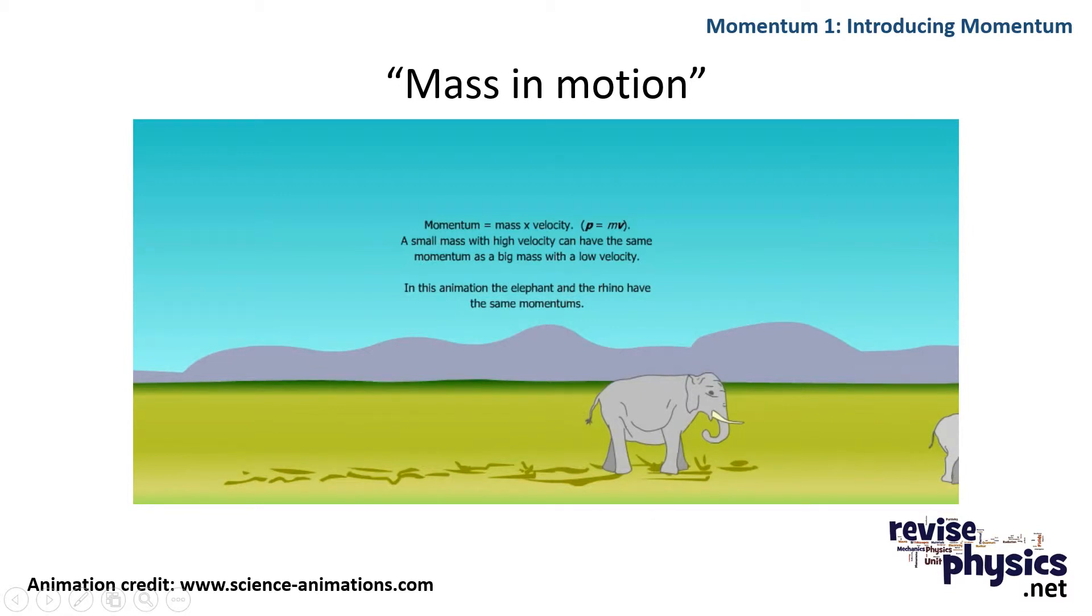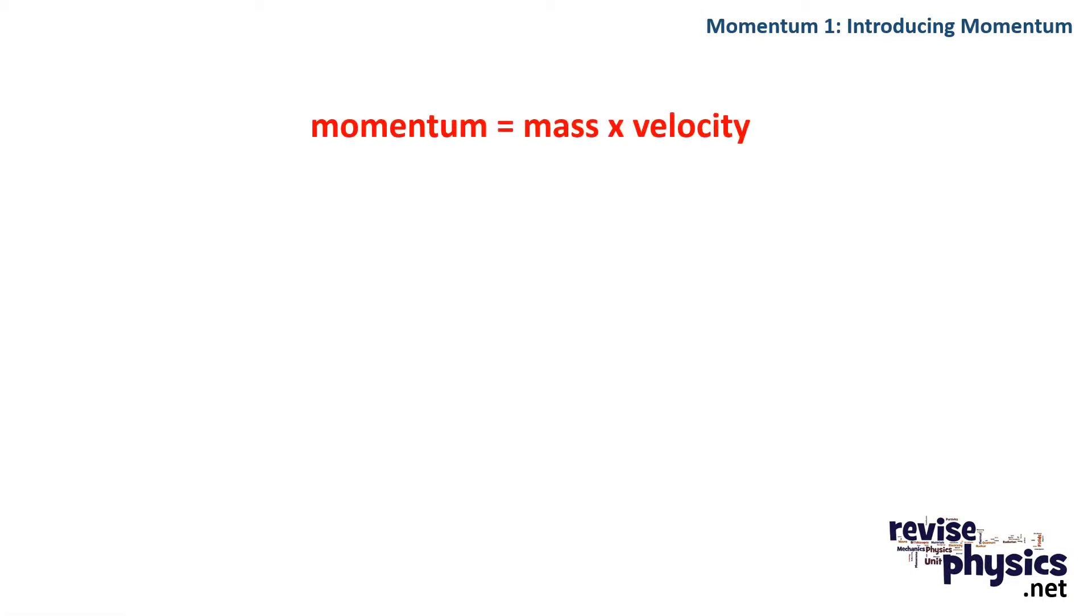Since momentum is mass in motion, the equation for momentum is just mass times velocity, where mass is in kilograms and velocity is in meters per second. In letter form, p (our momentum) is equal to mv. That means the unit for momentum is kilogram meters per second, or kg ms⁻¹.